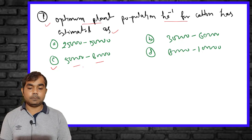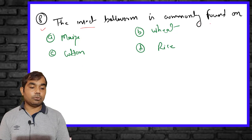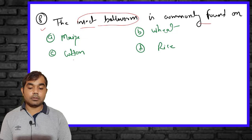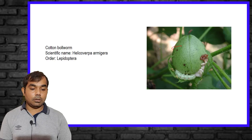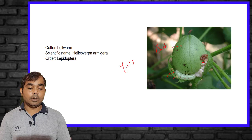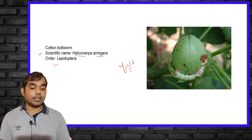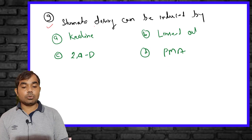The eighth MCQ asks: the insect ball worm is commonly found on which crop? The right answer is cotton. The ball worm bores inside the cotton boll, reducing lint quality and ultimately yield. Its scientific name is Heliocoverpa armigera, a Lepidoptera insect.